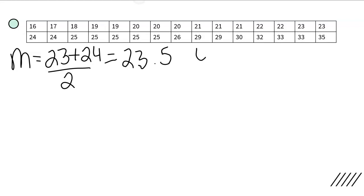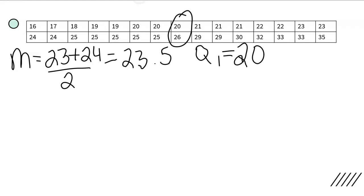Next we want to find Q1, which is the median of the top half of the data. There are 15 values in the top half, so the middle number is in position 8. You can cross out a number on both ends until you get to that middle number, or take half of 15, which is 7.5, and round up to 8. So the 8th number is the median of the top half. Q1 is going to be 20, and Q3 is going to be 26.